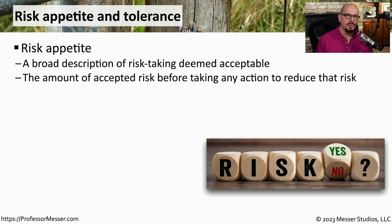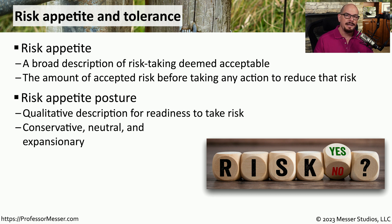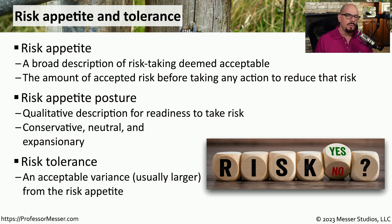Not all risk requires an organization to act. There may be a certain amount of risk that the organization is willing to take — we refer to that value as a risk appetite. Some organizations will set a qualitative value on this appetite, which we refer to as a risk appetite posture. They might say they are conservative, neutral, or expansionary to a particular risk type. Another important value is the risk tolerance, which is often a larger variance than the risk appetite. So we might have a risk appetite that is relatively low, and our risk tolerance might be just above that appetite value.